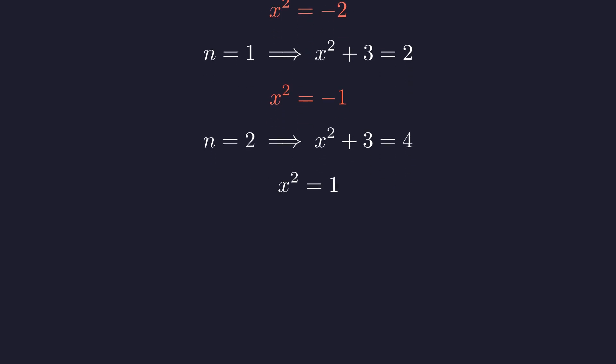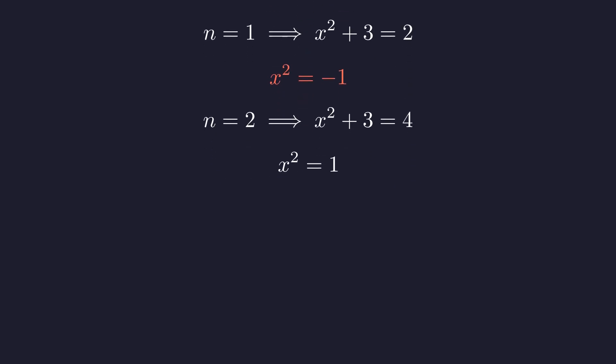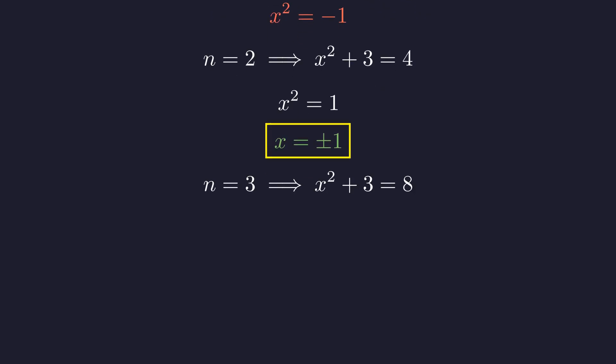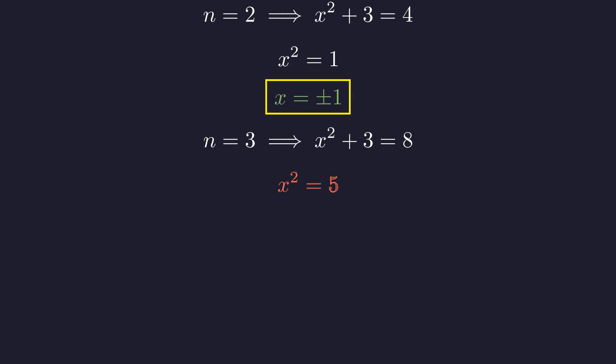Subtracting 3, we get x squared equals 1. This gives us two solutions: x equals plus or minus 1. If n is 3, x squared plus 3 equals 8. This means x squared equals 5. No integer solution here.